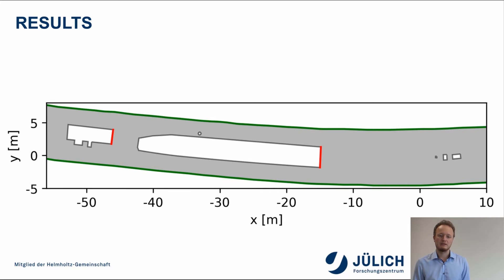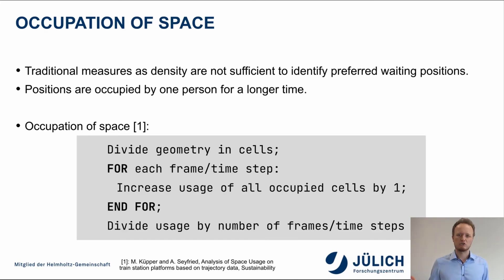The SBB, the Swiss Railway Company, installed some sensors to obtain trajectory data in this part of the geometry. To ensure that the pedestrian can move to each side of the geometry as the original platform, obviously, is longer than the 60 meters, we extended it. Now, we need a measure to see how good our model is. Traditional measures as density are not sufficient to identify preferred waiting positions. For example, let's take a pedestrian who stands at one specific spot for a whole time, but is far away from each other. The density is quite low, but he occupies this space for a long time. Hence, a different method was introduced by Küpper and Seyfried in their work. They call it occupational space, where basically you look at what ratio one cell is occupied during the course of a simulation or during the timeframe you have available.